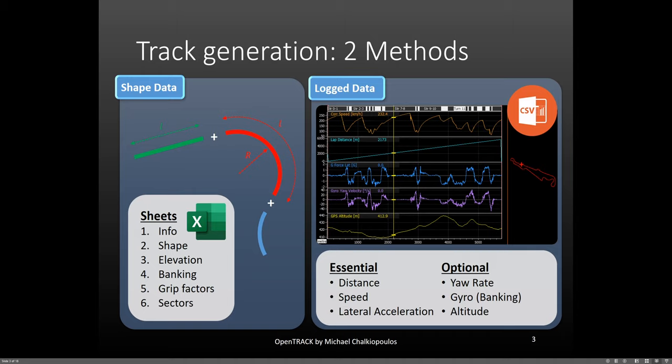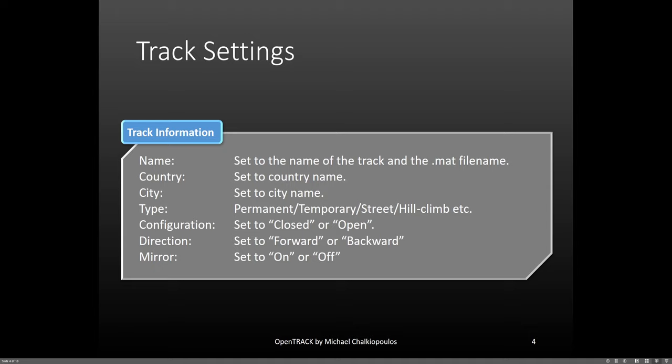On GitHub, you will find empty template files for a new track creation both for the shape and the log data modes. You will have one Excel or CSV file for each track that you create. Let's now talk about the basic info and the settings.